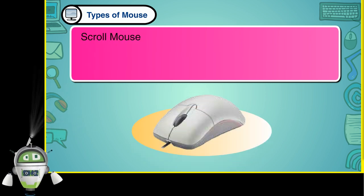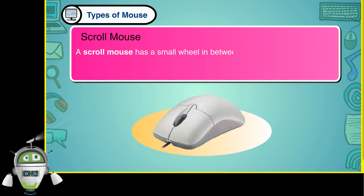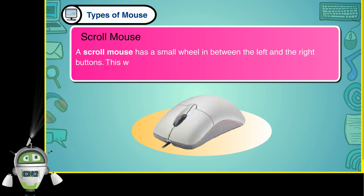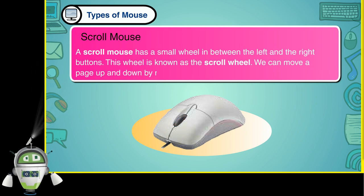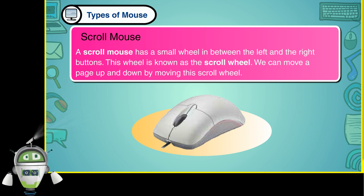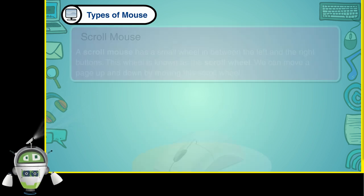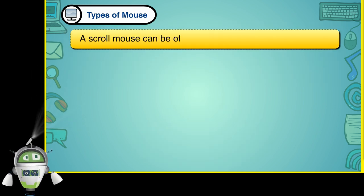Scroll mouse. A scroll mouse has a small wheel in between the left and the right buttons. This wheel is known as the scroll wheel. We can move a page up and down by moving this scroll wheel. A scroll mouse can be of three types.